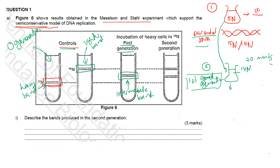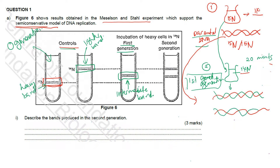This is because to produce the DNA for the first generation, the bacteria uses the parental DNA as a template to synthesize the daughter DNA. Since the bacteria is now grown in nitrogen-14, the complementary DNA strand incorporates nitrogen-14. Therefore, in the first generation, 100% of the bacterial DNA consists of both nitrogen-15 (from the template) and nitrogen-14, producing an intermediate band.